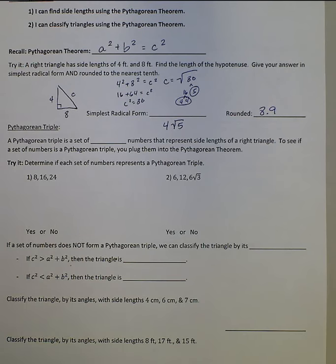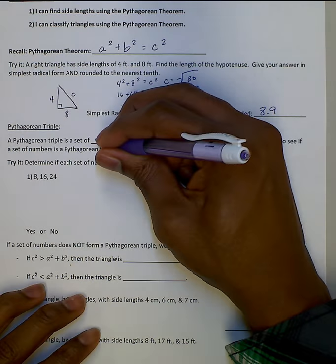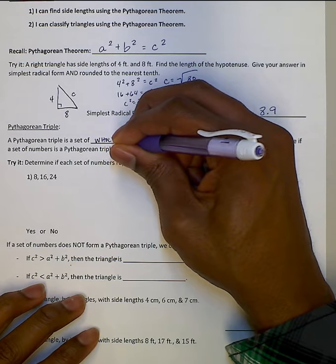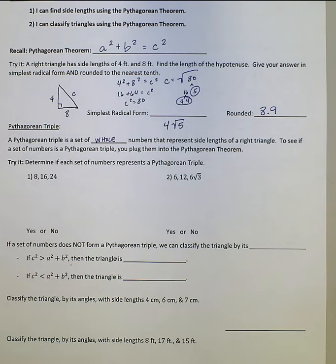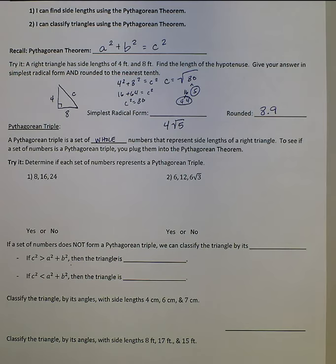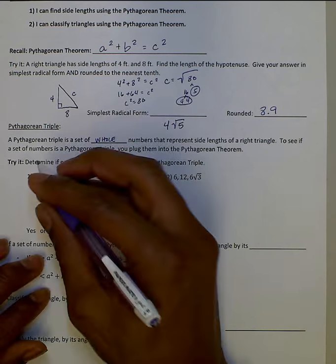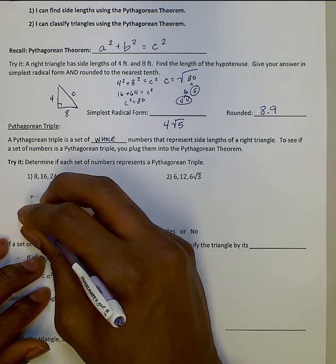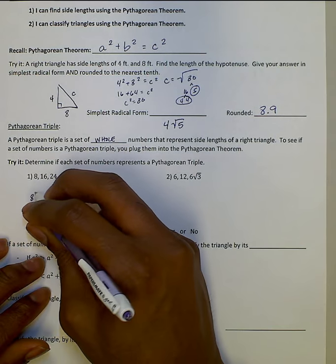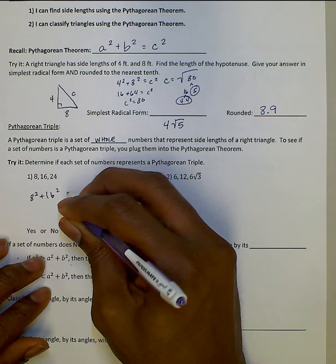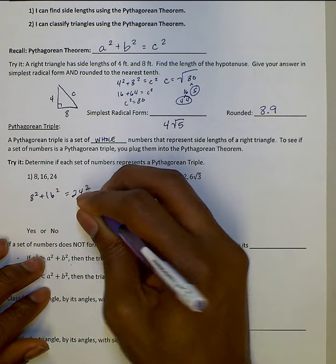Pythagorean triple. A Pythagorean triple is a set of whole numbers that represents side lengths of a right triangle. We're going to be able to see if a set of numbers is a Pythagorean triple. Just plug it into the Pythagorean Theorem and see if it works or not.